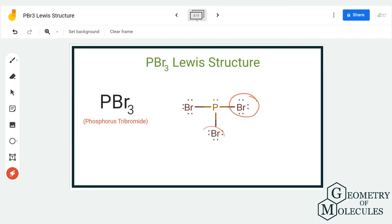As the octets of all these atoms are complete, this is the Lewis structure for PBr3, in which there are three single bonds formed between phosphorus and bromine atoms with complete octets for each atom.